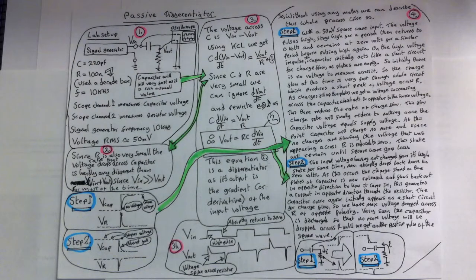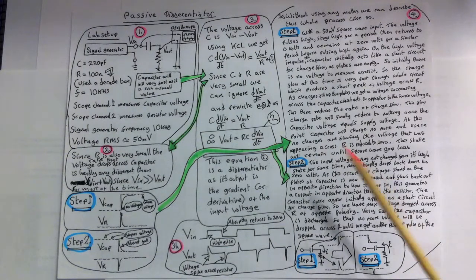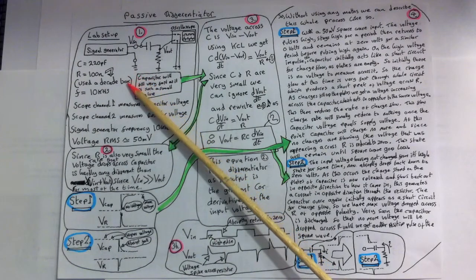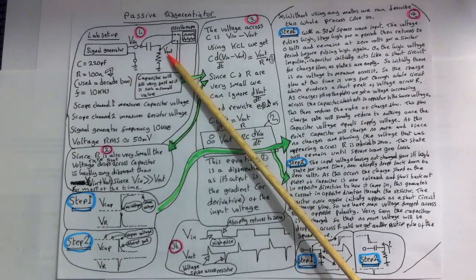We'll connect an oscilloscope to measure the voltage drop across the capacitor and use the scope's second channel to measure the voltage across the resistor, which will be here, V out.